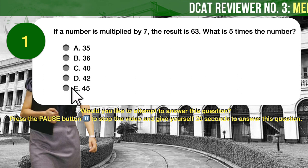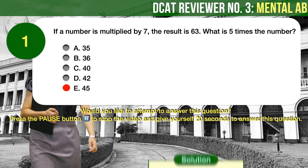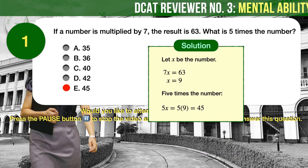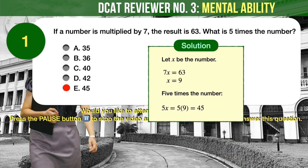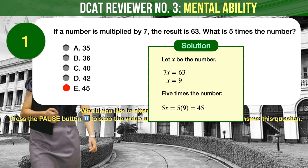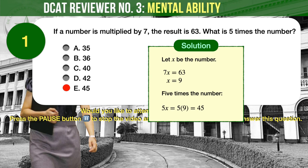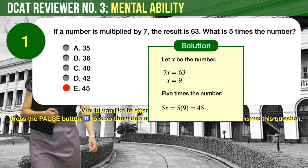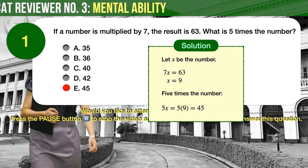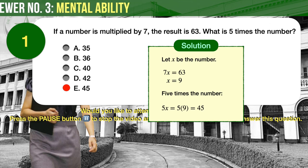The correct answer is E, 45. Let X be the number. Multiplying the number by 7 gives us 63, so we can easily solve for X to be 9. Therefore, 5 times the number is 45.